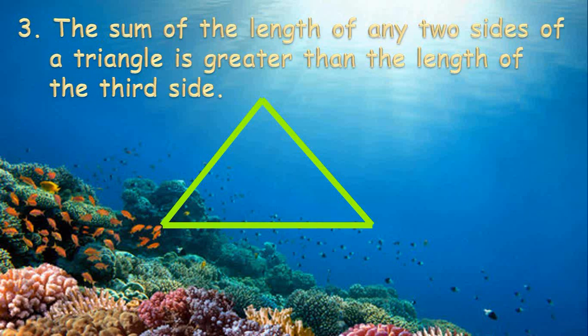The third one is the sum of the length of any two sides of a triangle is greater than the length of the third side.